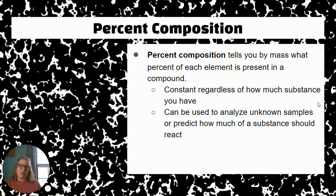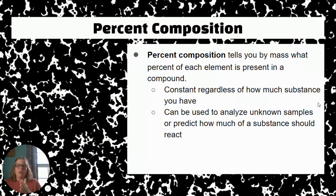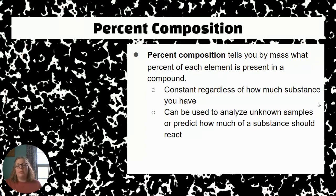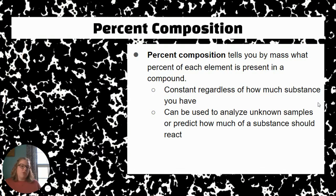So if we have, let's say, that calcium chloride dihydrate, it's always going to have that same percent of water that I see in there, whether I have a ton, a literal ton of it, or 0.1 grams. It's going to be the same percentage of H2O in there. And the reason why we want to use percent composition is because we can use it to analyze unknown samples or predict how much of a substance we should have reacting or should show up and things like that.